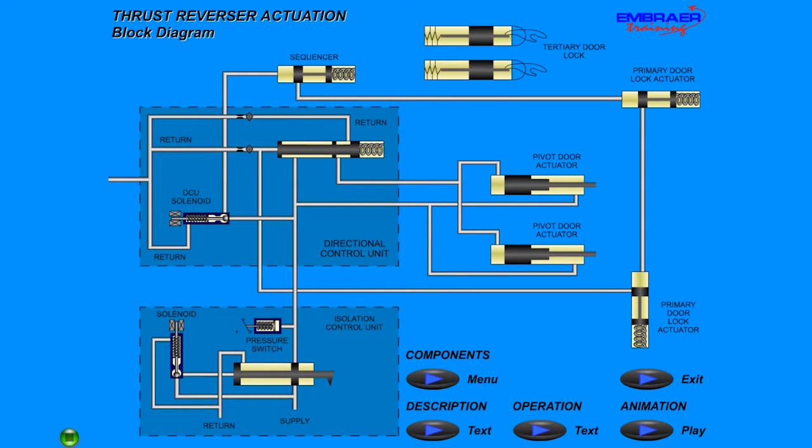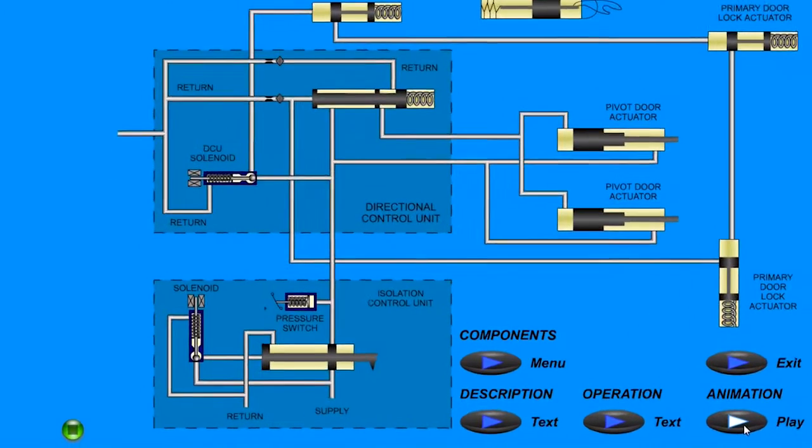The ICU, DCU, and tertiary lock solenoids are energized. Hydraulic pressure starts at the ICU.